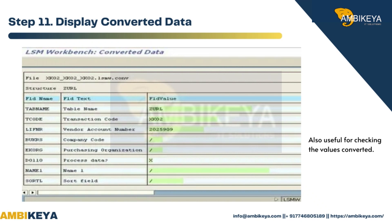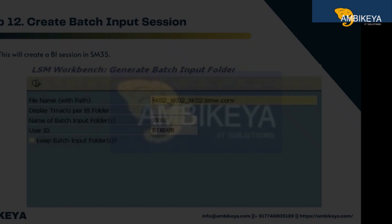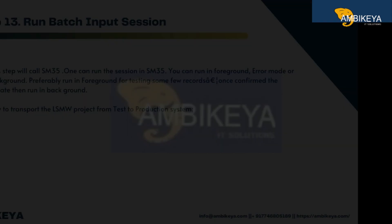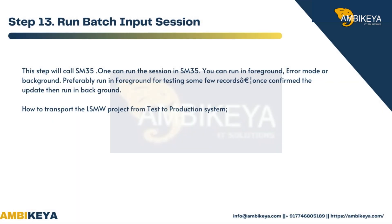Step 11 is also useful for checking the converted values. Step 12: Create Batch Input Session — this will create a BI session in SM35. Step 13: Run Batch Input Session — this step calls SM35. You can run the session in foreground, error mode, or background. Preferably run in foreground for testing a few records, and once the update is confirmed, run it in background.